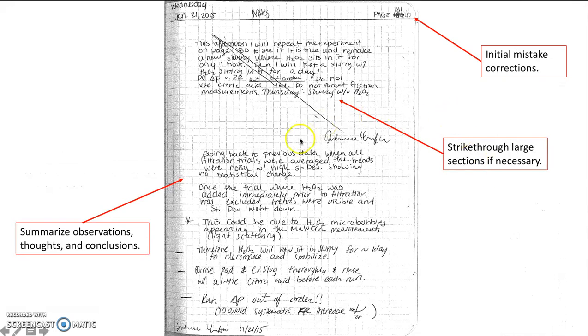You can see that she also did not follow what she wrote here so she put a giant strikethrough through it and then she signed that to say yes I intended to do that. She's got summaries of observations, thoughts and conclusions, how to move forward in this experiment. And again here's another example of an initial mistake that was struck through, corrected, and then she put her initials there to indicate that she corrected that herself.